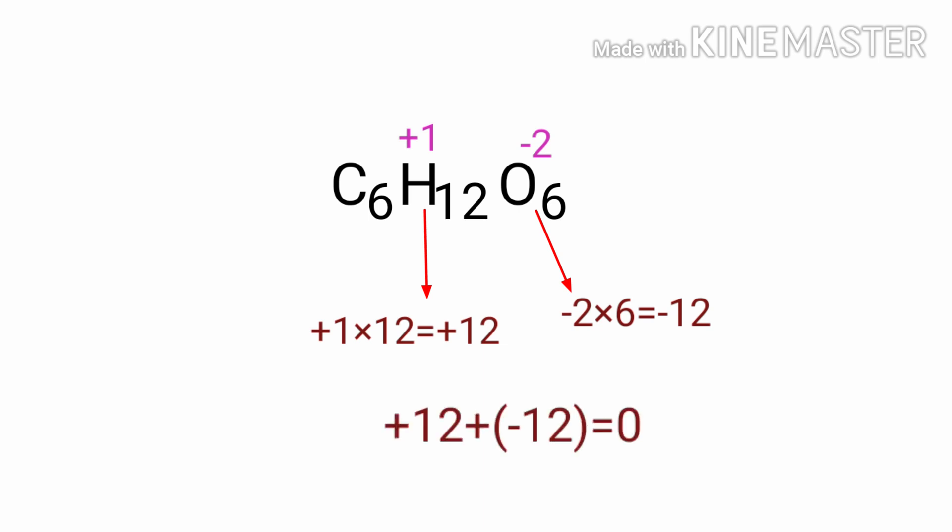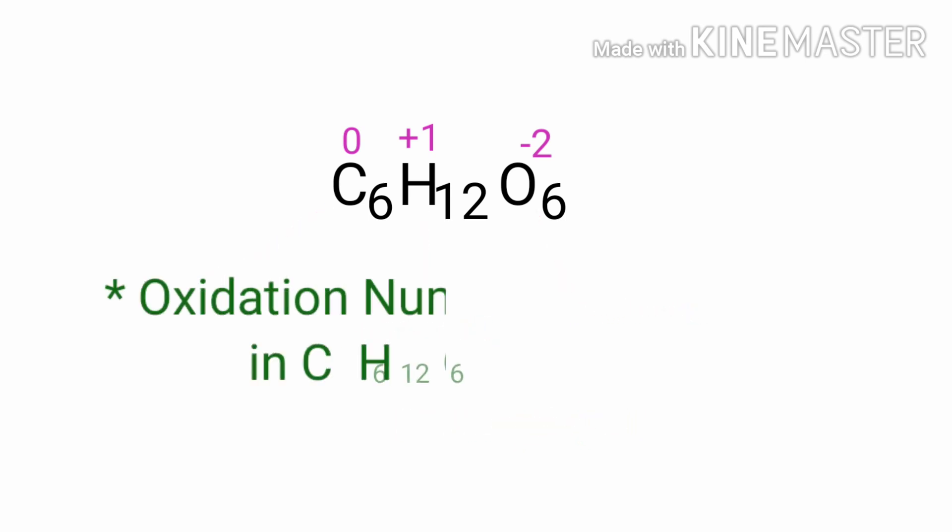So, the carbon in C6H12O6 should have 0 oxidation number. Therefore, the oxidation number of carbon in C6H12O6 is 0.